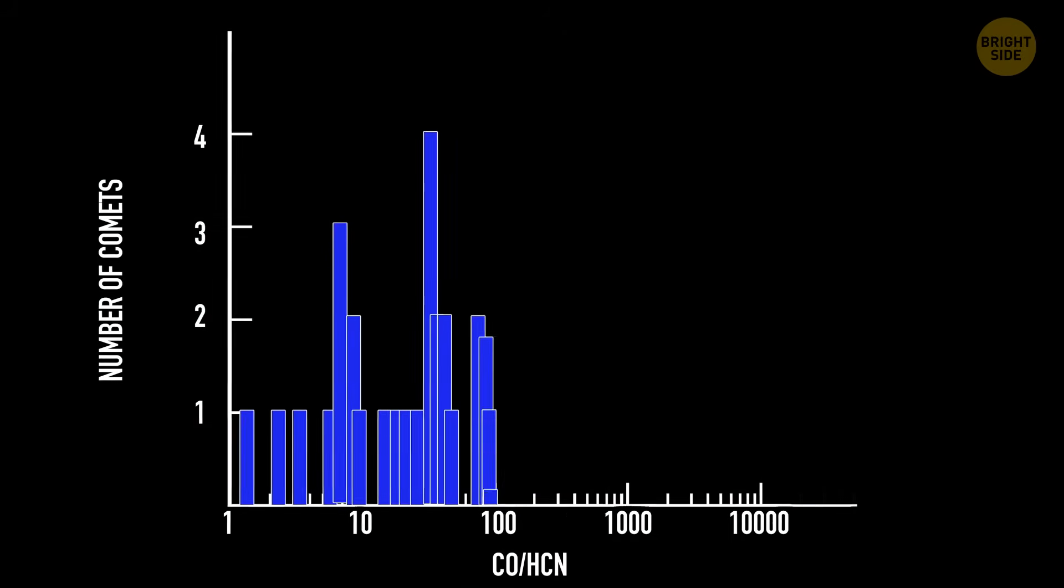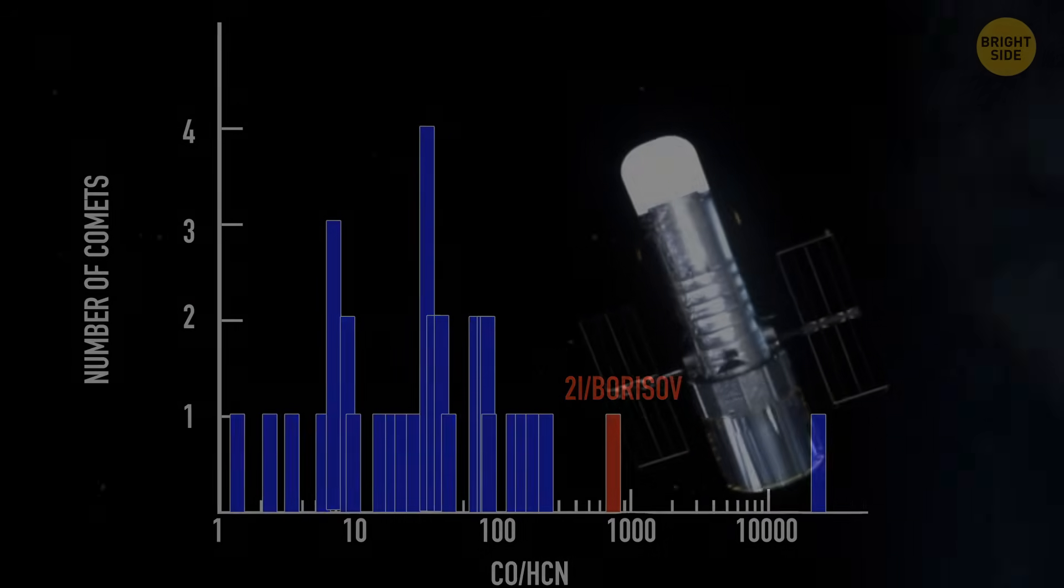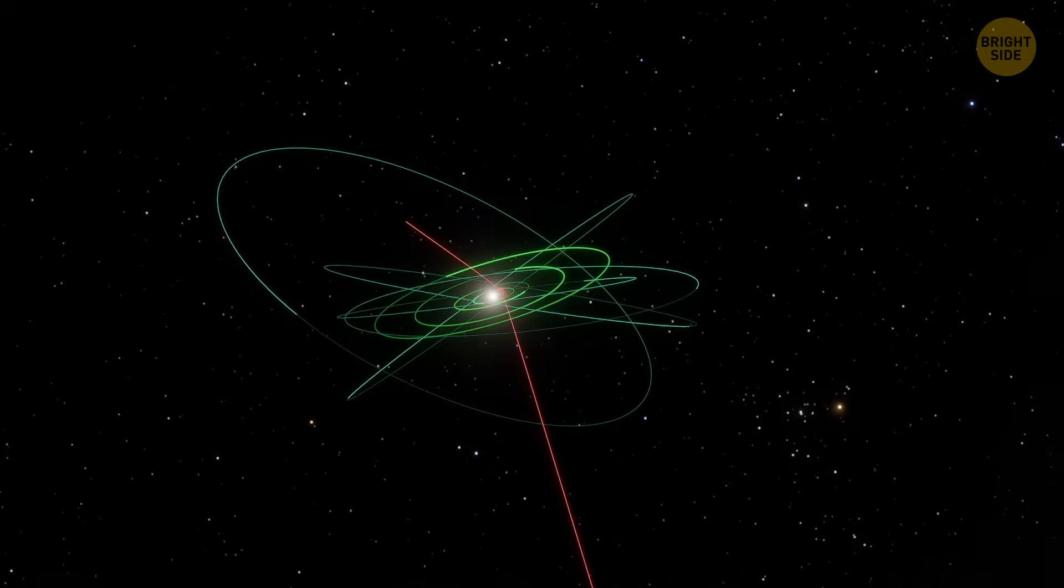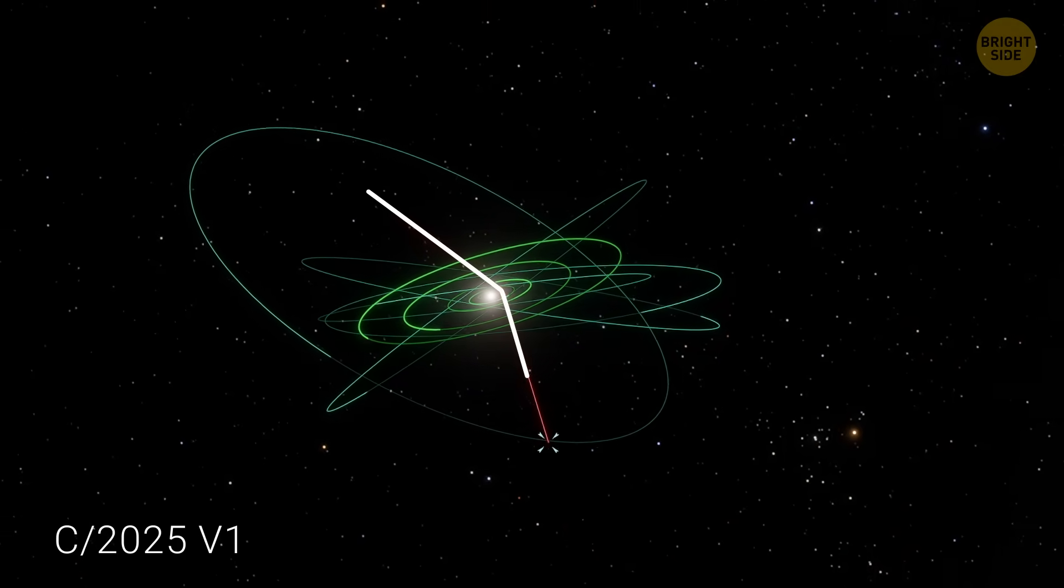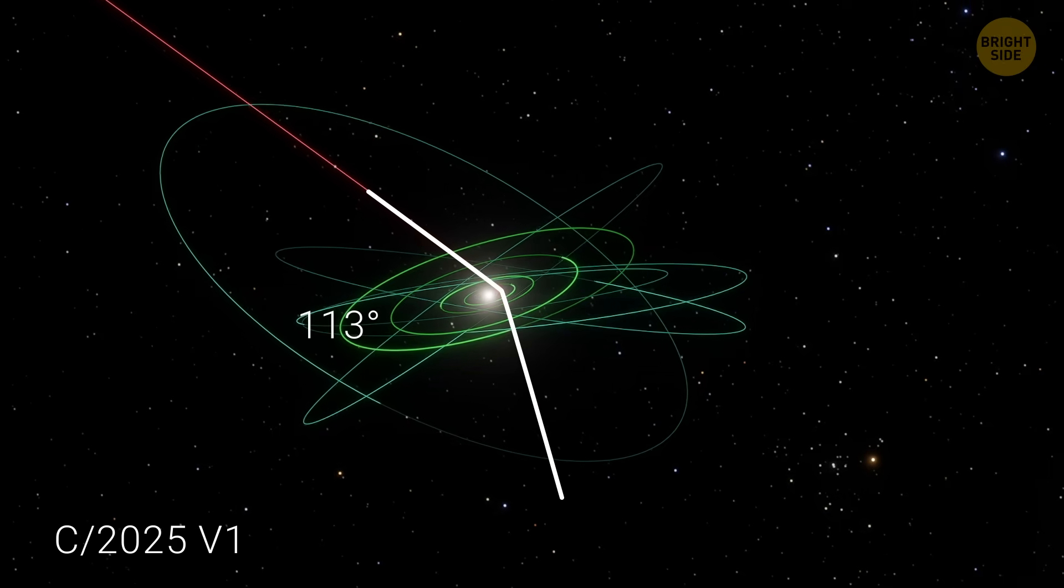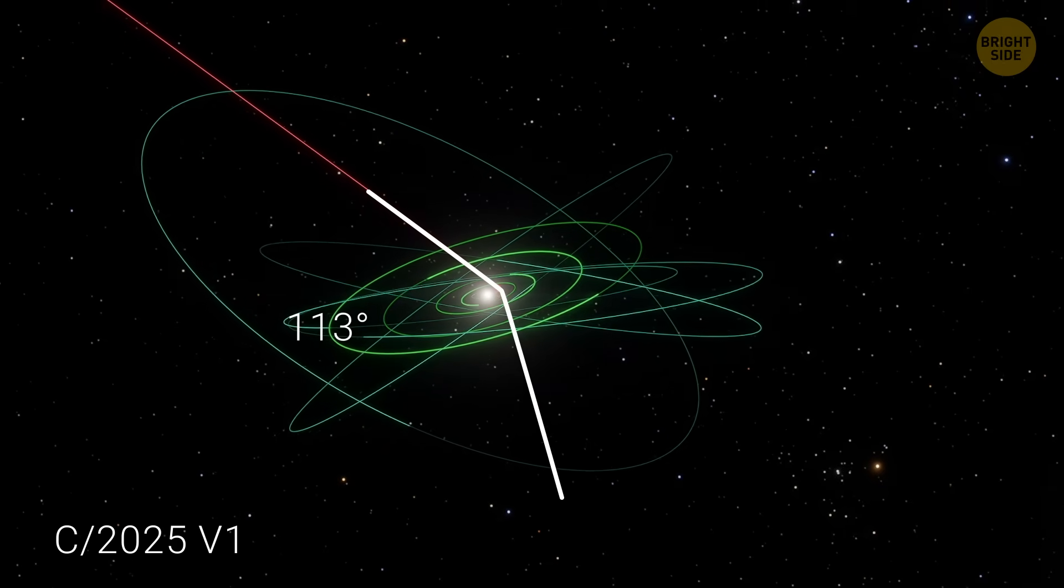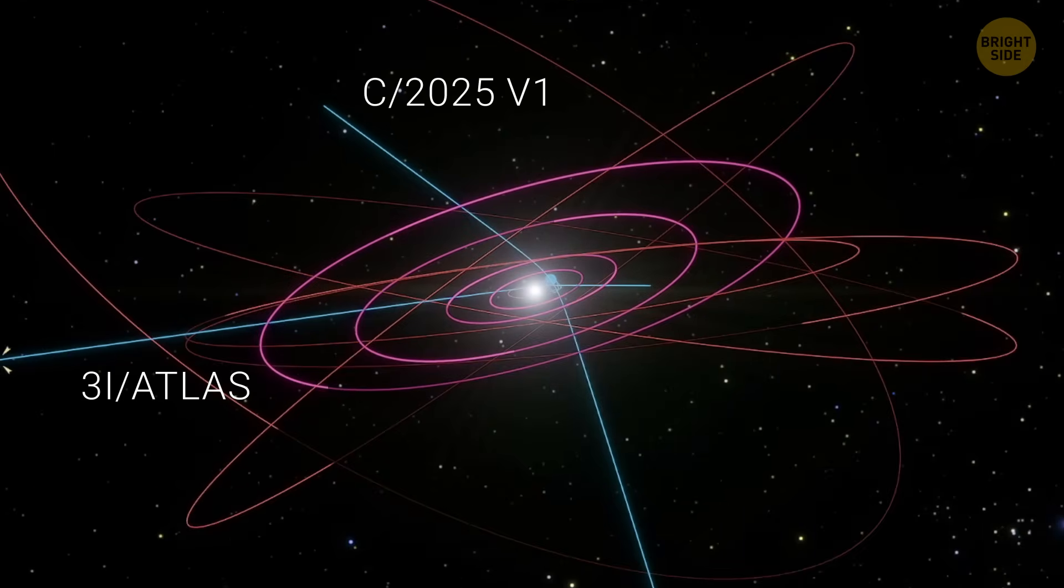It's now got its official name and is listed in NASA's and the Minor Planet Center's databases. C-2025 V1 has some unusual features. Its orbit is tilted 113 degrees, which means it's moving almost up and over the regular path that planets take.